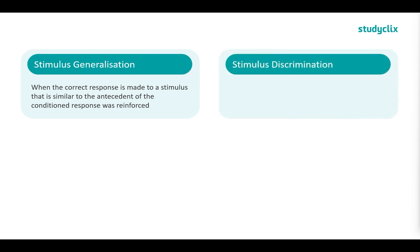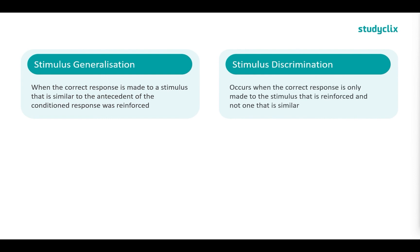We also have stimulus discrimination, where a response only occurs to the correct stimulus and not one that is similar. In the pigeon example, this would be when the pigeon only pecks at the disc when the green light is present and no other color.